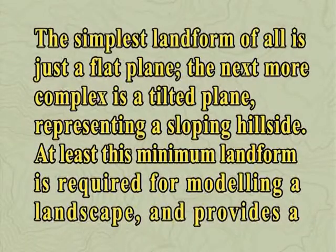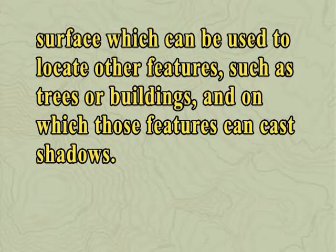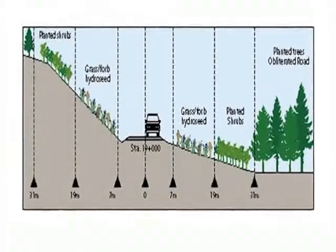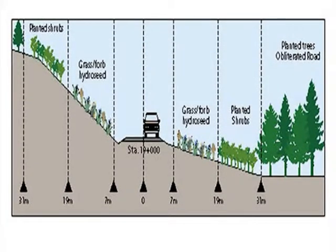Simple Plains. The simplest landform of all is just a flat plain. The next, more complex, is a tilted plain representing a sloping hillside. At least this minimum landform is required for modelling a landscape and provides a surface which can be used to locate other features such as trees or buildings and on which those features can cast shadows. Often, to make sure that surface objects appear to be sitting upon the terrain, they are created with their base elevation just below the elevation of the terrain surface or plane, so that they are truly embedded in the surface.